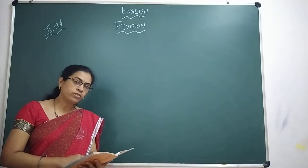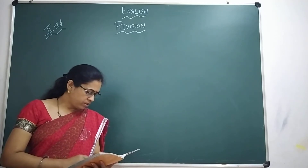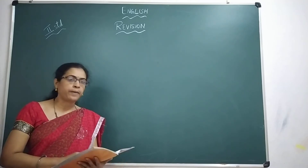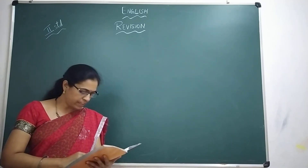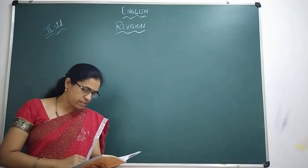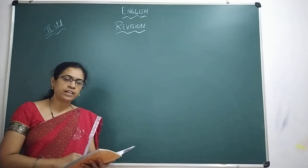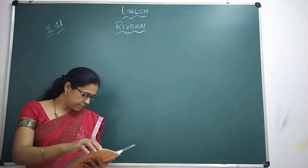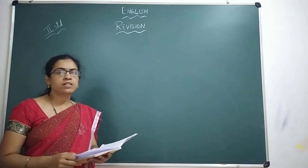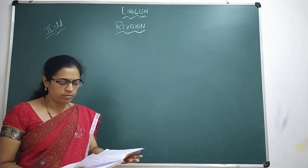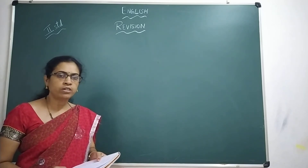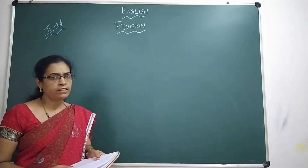Second question: Why did Hanuman want to eat the fruit? Hanuman was feeling hungry, so he wanted to eat the sun thinking that it was a fruit. Third question: Why was Hanuman strong? Hanuman was the son of the wind god, so he was very strong.